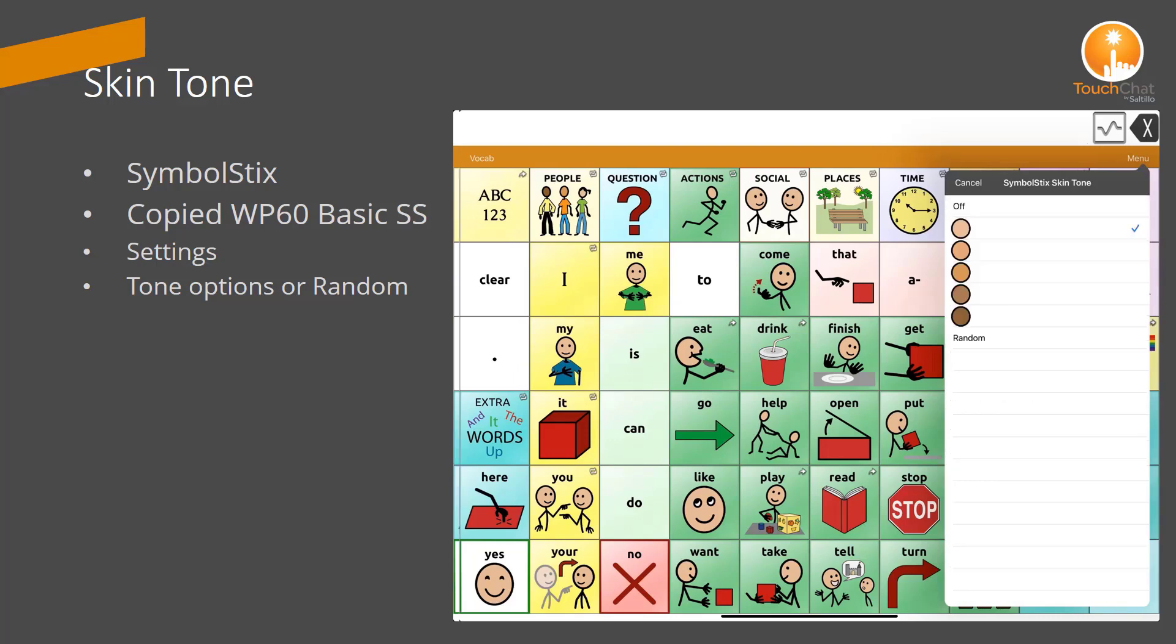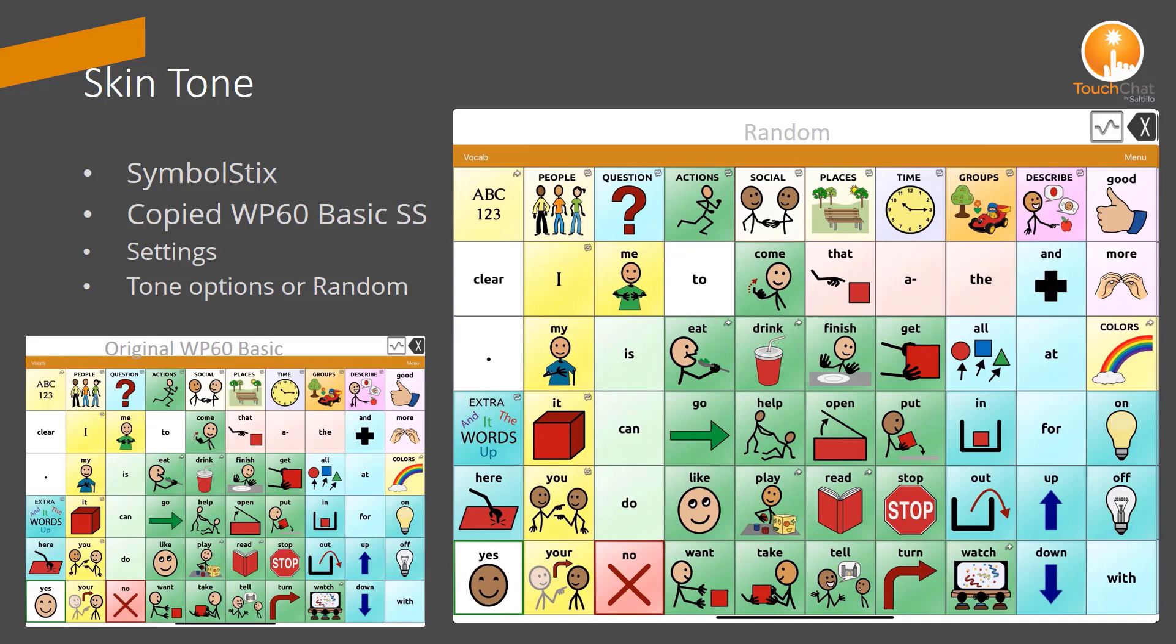I have options to apply the same skin tone throughout, or to have random skin tones throughout the vocabulary. Once I have selected the random skin tone, it will keep the randomized skin tones unless you hit random again, in which case it will randomize the skin tones again throughout the vocabulary.